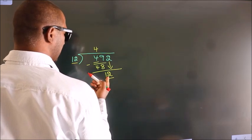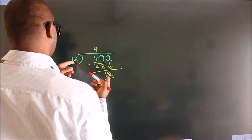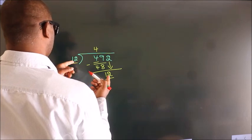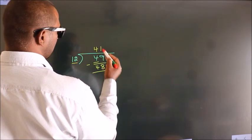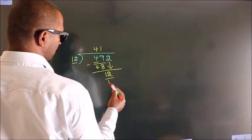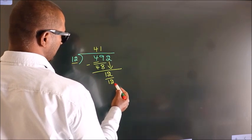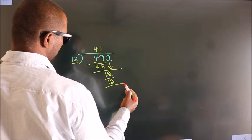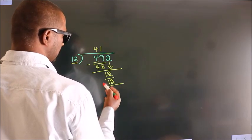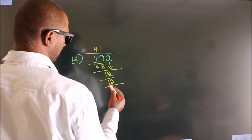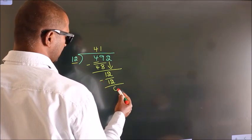When do we get 12 in the 12 times table? 12 once is 12. Now we subtract. We get 0.